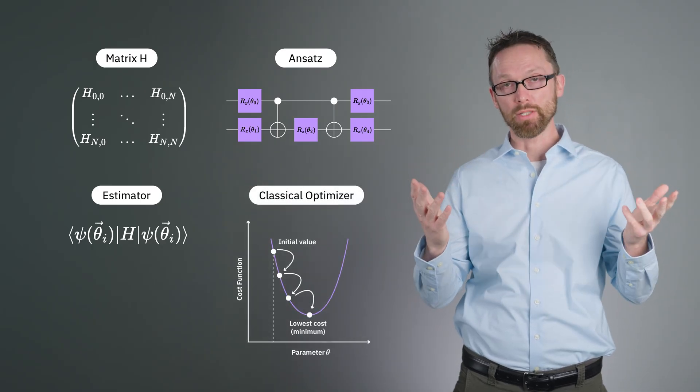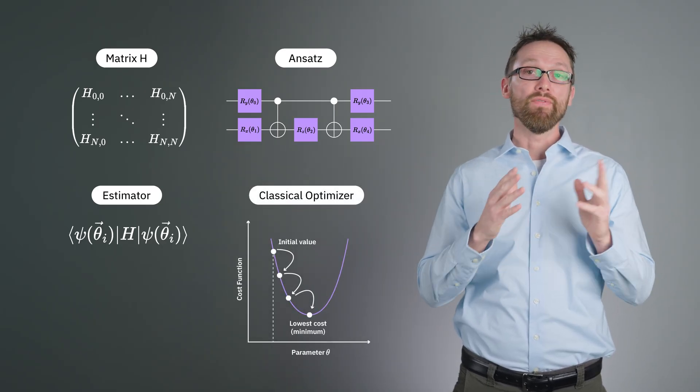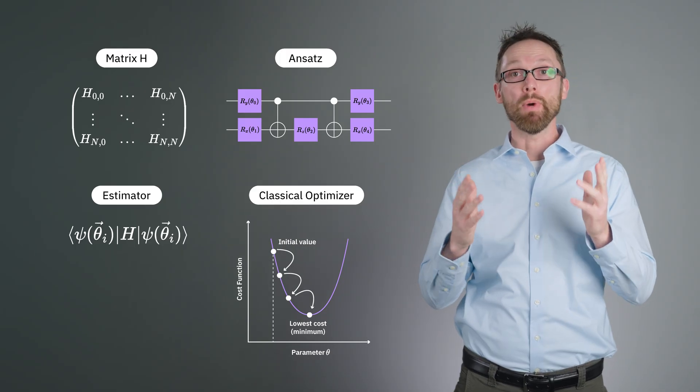Finally, we need a classical optimizer, an algorithm that varies parameters to try to minimize this cost function.